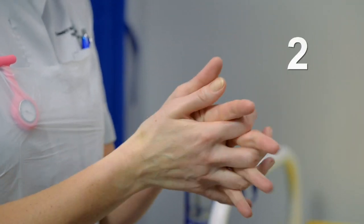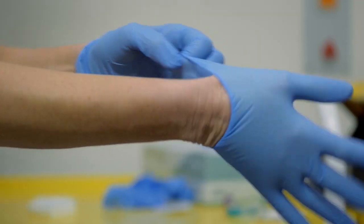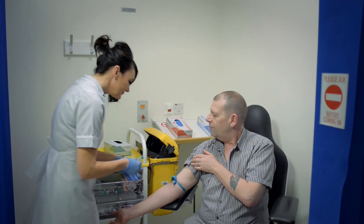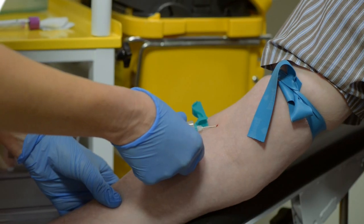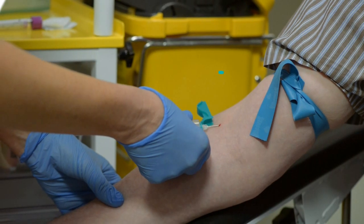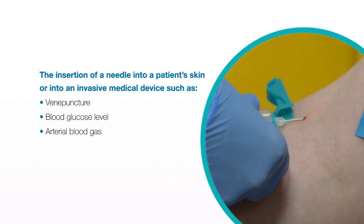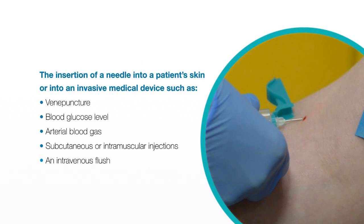Moment Two's role is to protect the patient from harmful germs entering their body during a procedure. Examples include the insertion of a needle into a patient's skin or into an invasive medical device, such as venipuncture, blood glucose level testing, arterial blood gas, subcutaneous or intramuscular injections, or an intravenous flush.